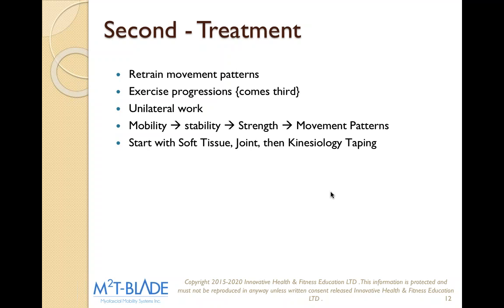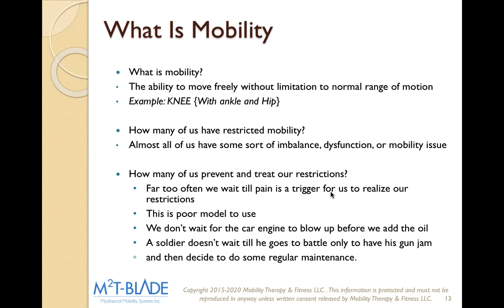Someone just asked what M2T stands for — it stands for Myofascial Mobility Tool. Our whole goal is to create mobility within the myofascial system: find out what's not moving and make it move better, then stabilize from there. Mobility is the ability to move freely without limitation to normal range of motion. Probably everyone has restricted mobility. Restricted mobility doesn't always mean pain, but it will lead to a greater chance of experiencing pain or injury.